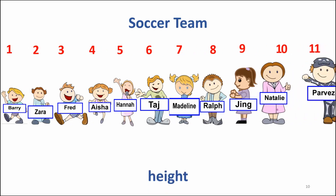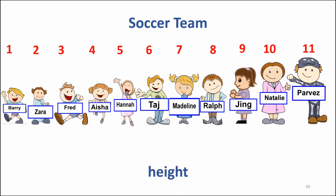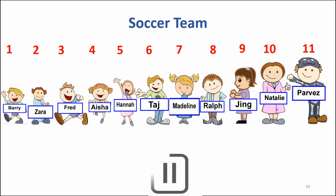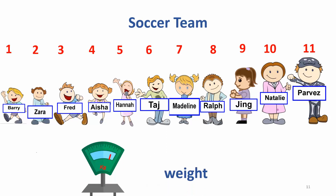How about by height? Then Barry would be number one and Parvez would be number 11. What are other ways? We could use weight.